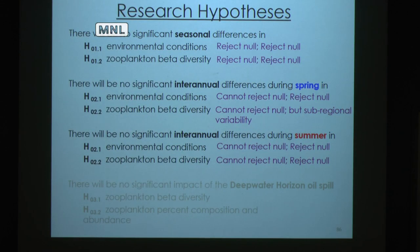We cannot reject the null for pre-spill summer inter-annual zooplankton differences, again probably due to limited sample size. However, we can reject the null for the environment: there is a lot of inter-annual variability in summer based on environment, likely related to winds and river discharge.